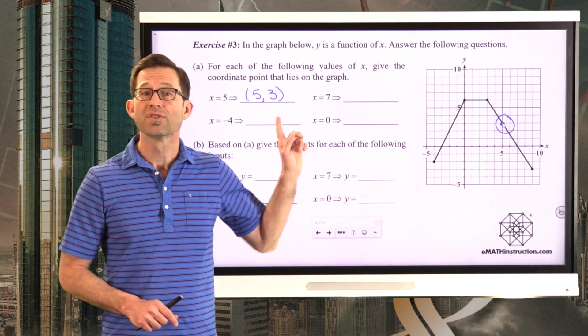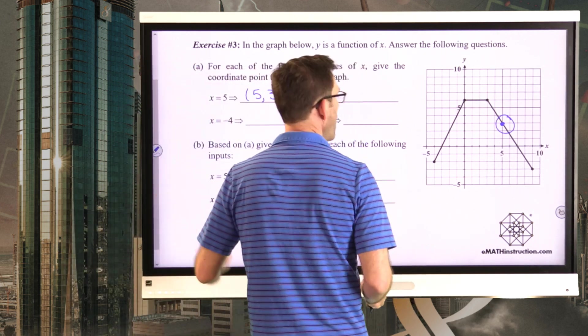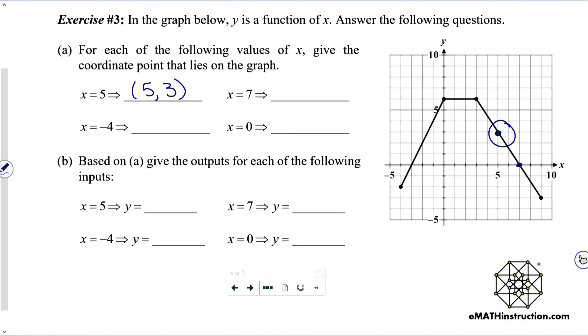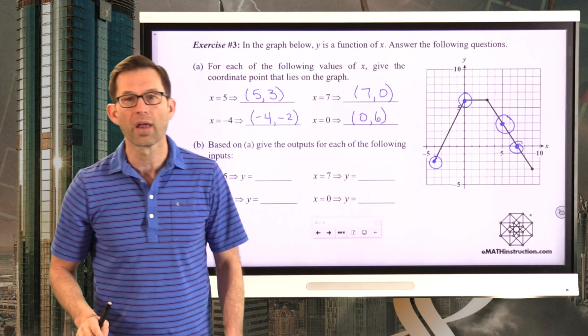All right, let's take a look. So x equals 7. Simple enough. We've got 7 right here. It lies right on the x-axis, so that's the point 7 comma 0. For x equals negative 4, that's right here. That's actually the end point, the left end point of the function. So that's negative 4 comma negative 2. And finally, x equals 0. That's actually the y-intercept of the function right there. And that's going to be 0 comma 6. So hopefully you got all of those points.